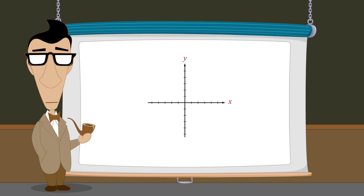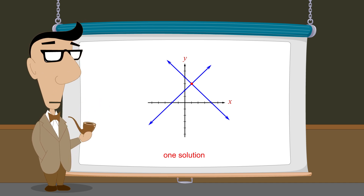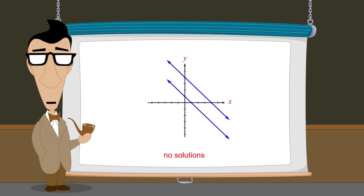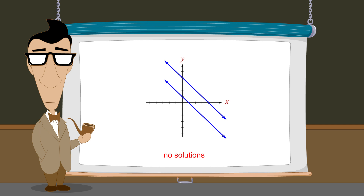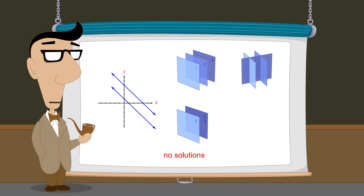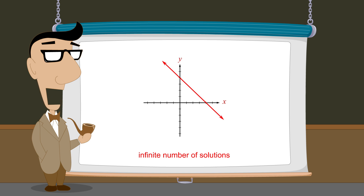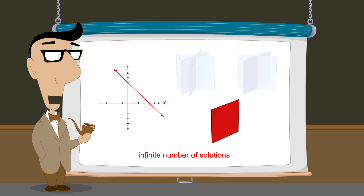Systems in two variables have a single unique solution when the two lines in the system are not parallel and thus intersect at a single point. Likewise, systems in three variables have a unique solution when none of the three planes are parallel and intersect at a single point. Systems in two variables have no solutions when the two lines are parallel and distinct, and systems in three variables have no solutions when any two planes are parallel and distinct, or when the planes are oriented so that their intersection points lie along three distinct parallel lines. An infinite number of solutions exists for systems in two variables when the two lines coincide, and systems in three variables have an infinite number of solutions when all three planes either coincide or intersect along a line.